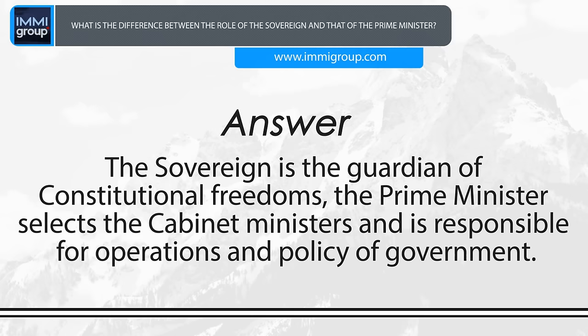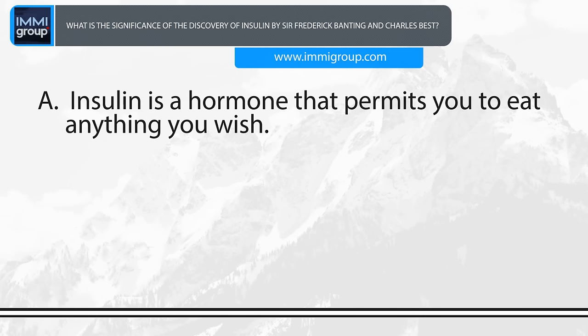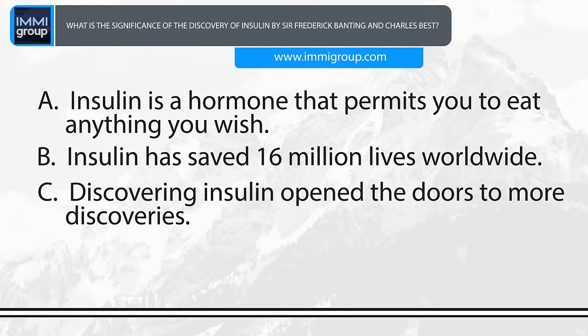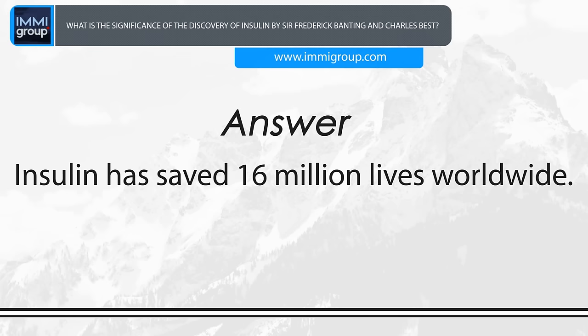What is the significance of the discovery of insulin by Sir Frederick Banting and Charles Best? A. Insulin is a hormone that permits you to eat anything you wish. B. Insulin has saved 16 million lives worldwide. C. Discovering insulin opened the doors to more discoveries. D. Discovering insulin made Dr. Banting and Best famous. Answer: Insulin has saved 16 million lives worldwide.